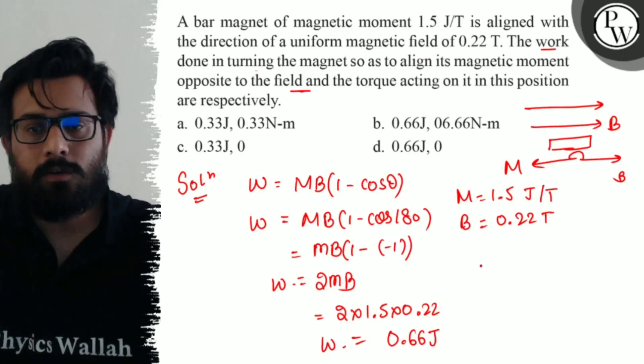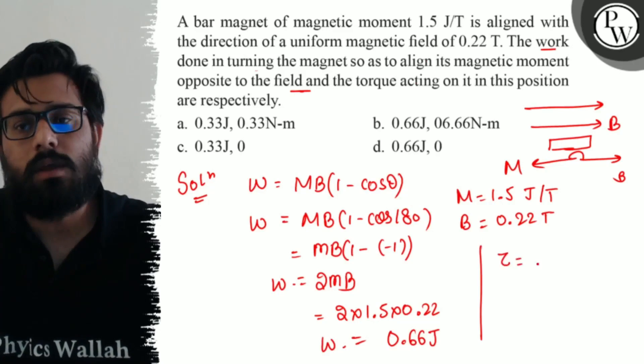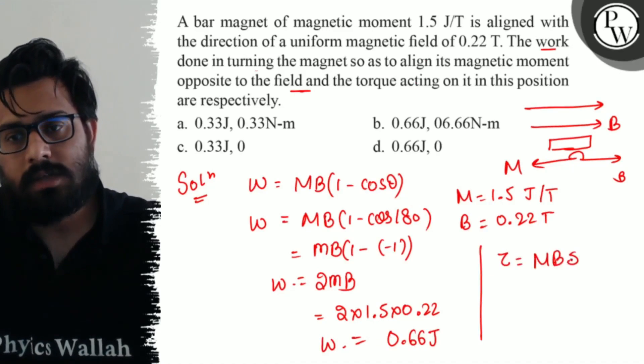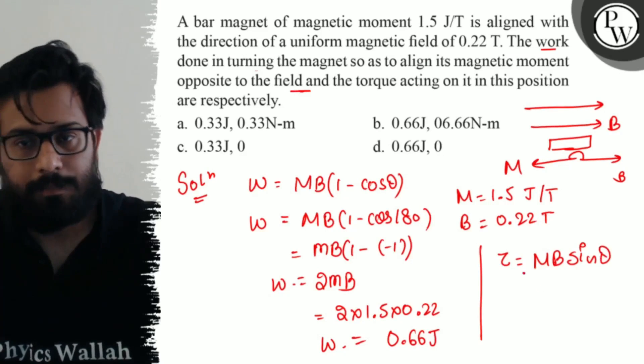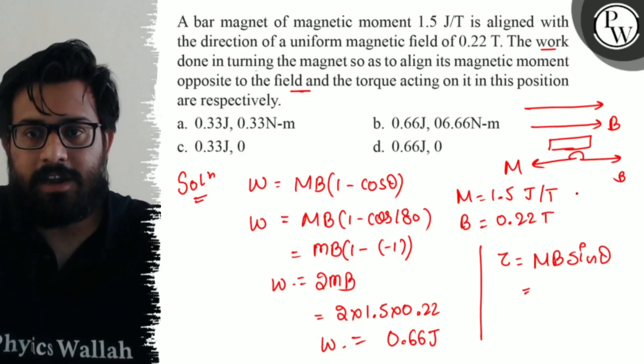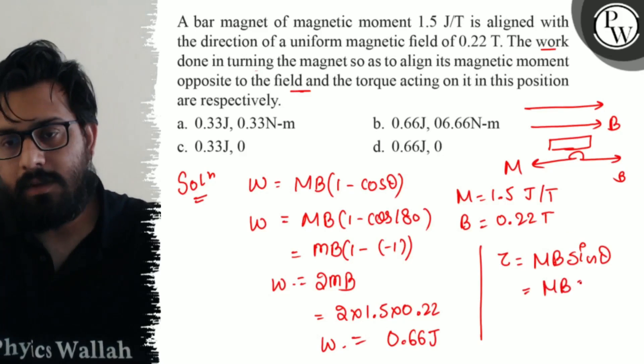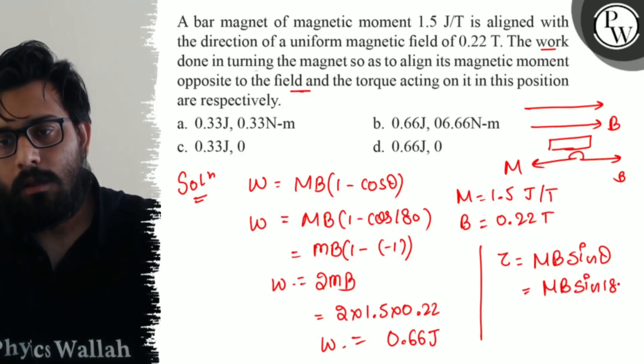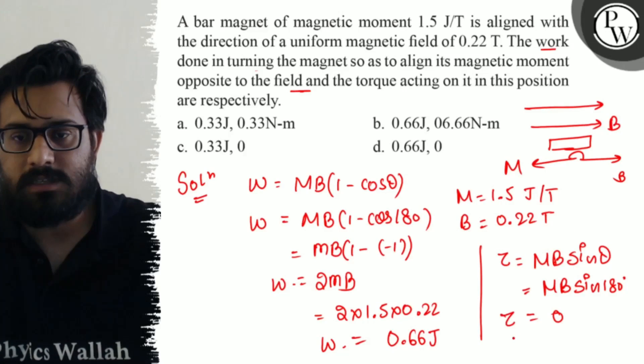Now what about the torque? So torque is equals to MB sine theta. So theta is 180 degrees here. MB sine 180 degrees. We know that sine 180 is 0. So your torque comes out with 0.